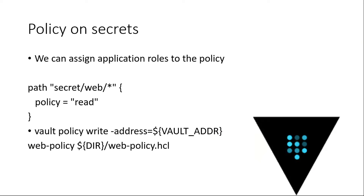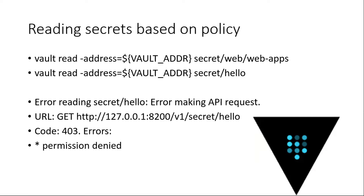Now that you have a key in there, you might want to provide some policies on that secret. You can say: here's the path for my secret using a wildcard, and I only want to provide read access. You write that policy into Vault and it will enforce it. For example, you can read vault secret/web/web-app and it returns the value, but if you try to read secret/hello which is outside the path wildcard, it gives you a 403 and says you don't have the right to read this. Every time you call Vault you need to have a token.